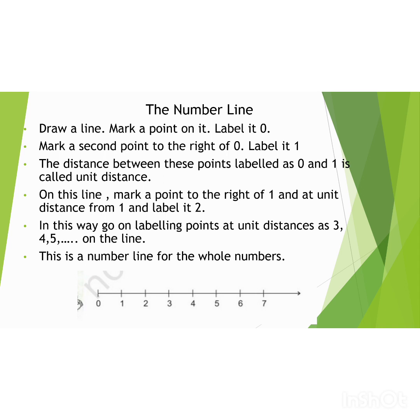In this way, go on labeling points at unit distances as 3, 4, 5, and so on on the line. This is a number line for the whole numbers. You can see children down, I have marked 0, 1, 2, 3, 4, 5, 6, 7, and so on you can continue. This is what we call a number line.